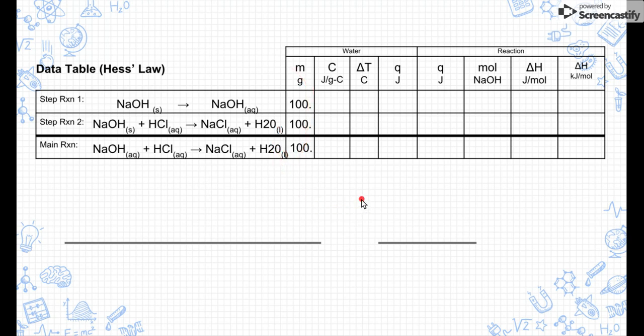Next is the specific heat. Because we're using water to determine our reaction, we're going to use the specific heat of water, which is 4.184. Finally, the change in temp. We were able to use our temperature probes to determine the change in temperature for each of these reactions. My first reaction was 3.8, second one was around 10 degrees of a difference in change, and the last one was 6.8 degrees difference in change.